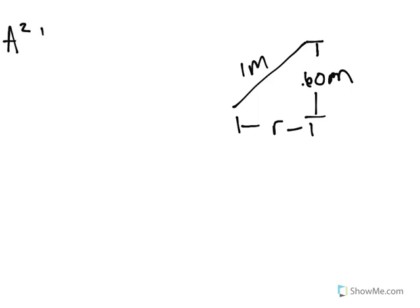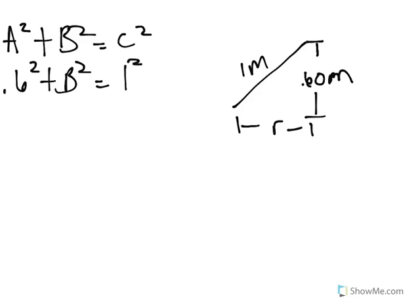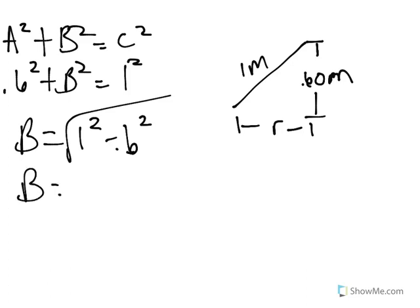A squared plus B squared equals C squared. In this case, it's 0.6 squared plus B squared equals 1 squared. And then, it would be B is equal to the square root of 1 squared minus 0.6 squared. So B is equal to 0.8 meters. The radius that we're dealing with is equal to 0.8 meters.